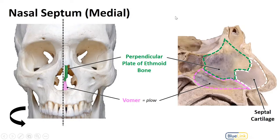You'll remember the crista galli as the attachment point for the falx cerebri, and also on either side of it you'll find the ethmoid foramina of the cribriform plate. Inferior and posterior is a view of that vomer, and it is named for its plow shape — you can see how it looks more like a plow, especially anteriorly.